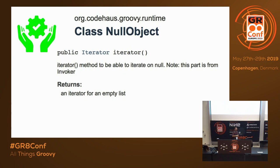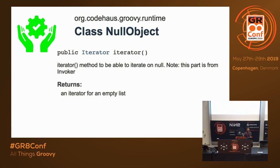Groovy uses something called the null object pattern. Whenever you call an iterator method on a null object, it returns an empty collection — in this case a list. If you call any other method on a null object, it will throw a NullPointerException, because this behavior is specific to collection types. There's a discussion about whether calling size on null now returns zero, but the key point is iterator methods on null return empty collections.